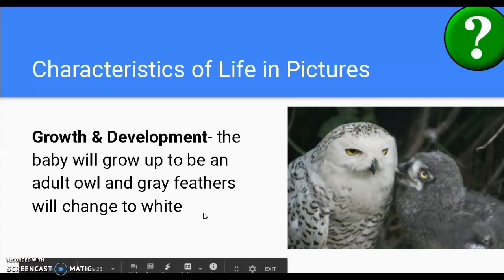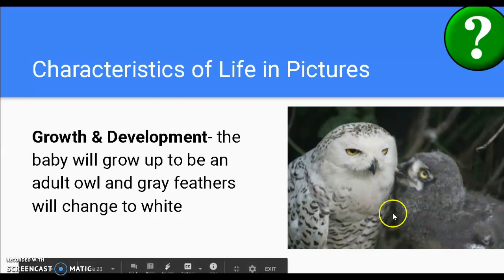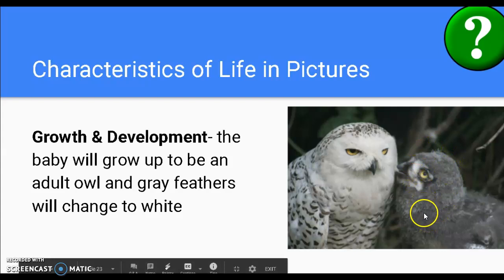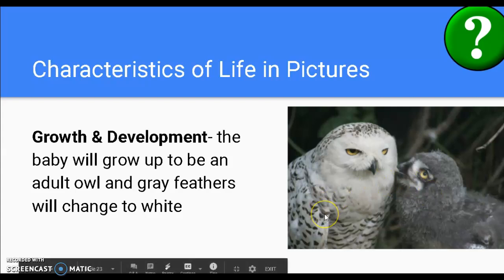I also see growth and development and reproduction — we have a baby owl here. It shows that reproduction happened, and that baby owl looks different from the adult owl. It's got really soft fluffy feathers that are not suitable for flight yet, but at some point that baby owl will grow and develop and its gray feathers will change to white.